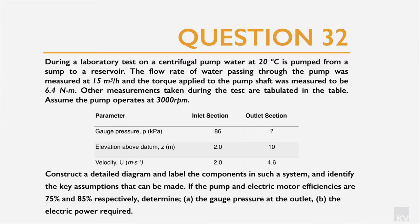We're asked to construct a detailed diagram and label the components in such a system, and to identify any key assumptions we can make when solving this problem. It also asks us, if the pump and electric motor efficiencies are 75 and 85 percent respectively, to determine the gauge pressure at the outlet and the electric power required.